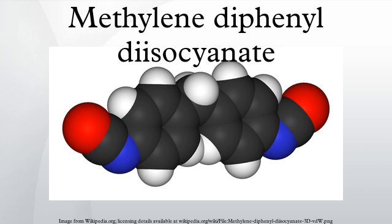Total world production of MDI and polymeric MDI is over 5 million tons per year. The largest producer is Bayer, followed closely by Yantai Wanhua. Other major producers are BASF, Borsucham, Dow, Huntsman, Nippon Polyurethane Industry, and OCI. All major producers of MDI are members of the International Isocyanate Institute, whose aim is the promotion of the safe handling of MDI and TDI in the workplace, community and environment.